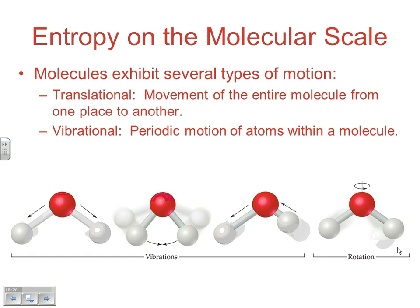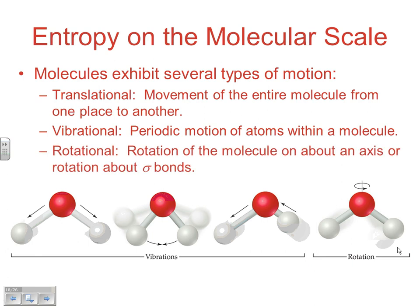If it's vibrating, that would be vibrational motion. It's still moving, it's just not really getting anywhere. Here we're looking at vibrations of the atoms and bonds within a molecule. So a periodic motion of atoms within a molecule would be vibrational motion. And then finally, we have rotational motion. Rotation of molecules about an axis or rotation about sigma bonds within a molecule. Those would be rotational types of motion.